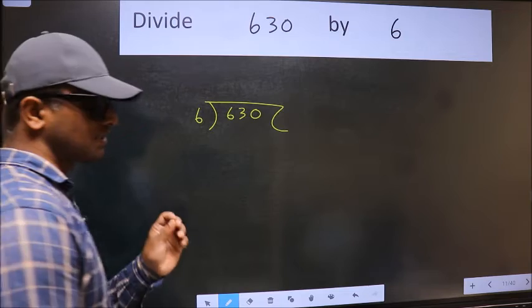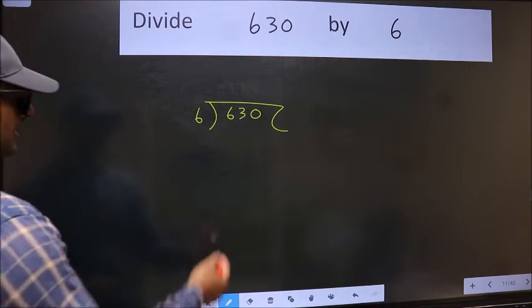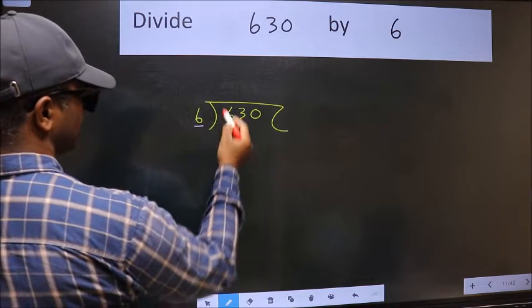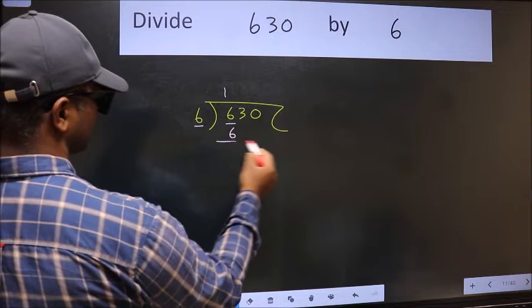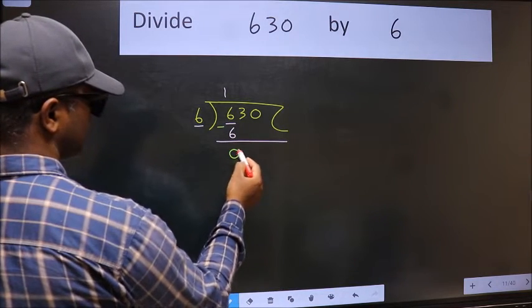This is your step 1. Next, here we have 6 and here 6. When do we get 6 in the 6 table? 6 once is 6. Now we should subtract. We get 0.